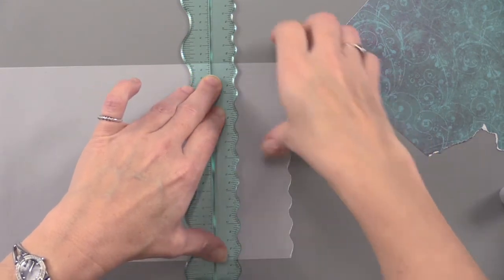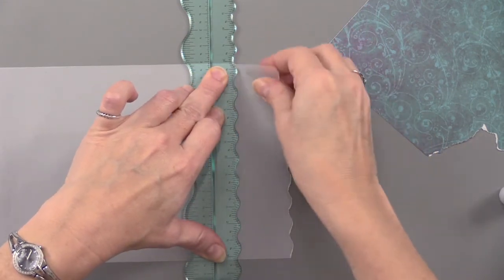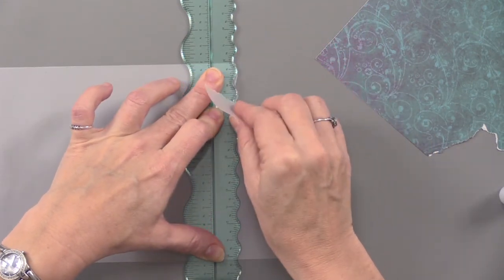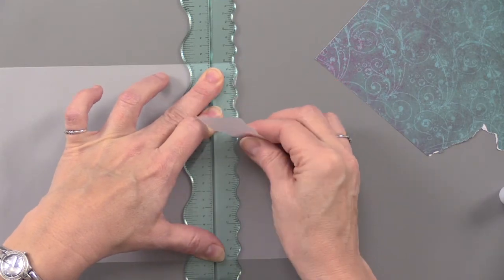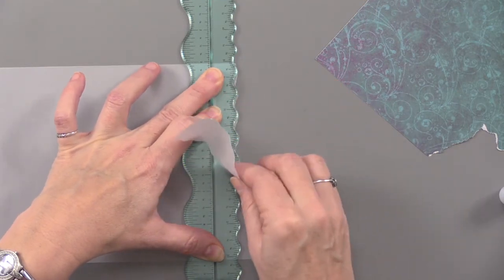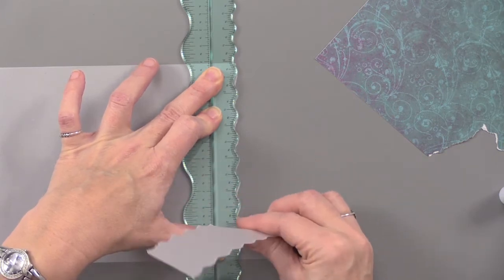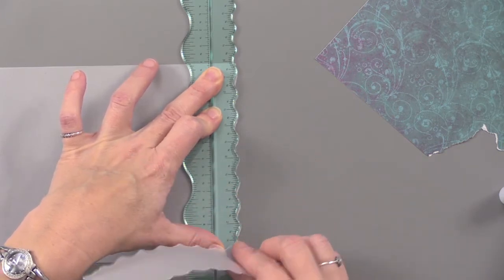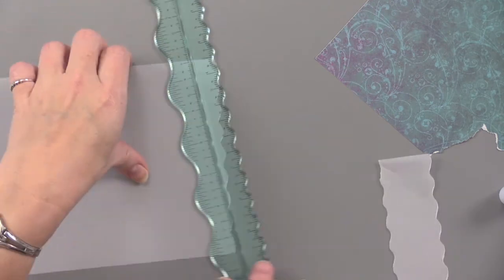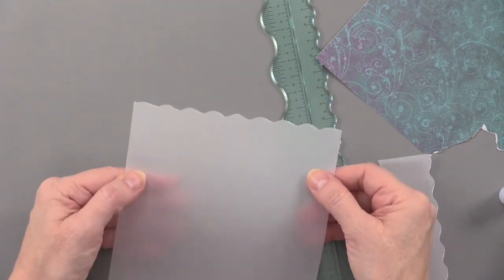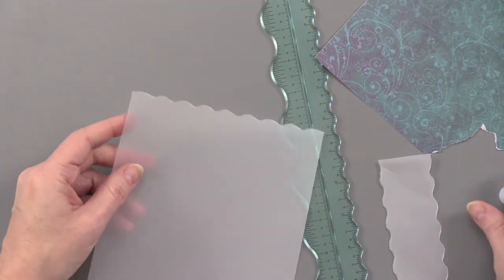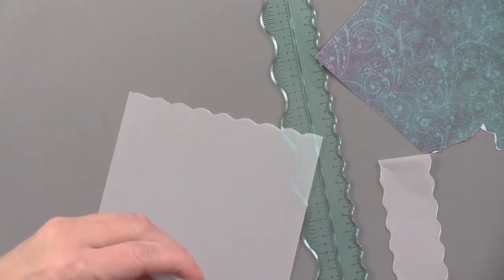It's going to be much easier to tear vellum this way than if I had not gotten it wet with that water pen. The water pen makes it do what I want it to do. I love that feature and that it comes with it. I really love that you have all of these different edges - this is so fun. You're going to be able to make such interesting cards.